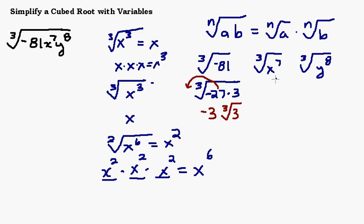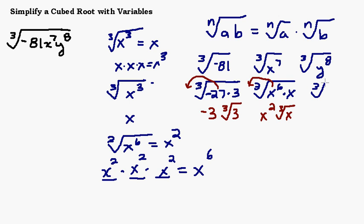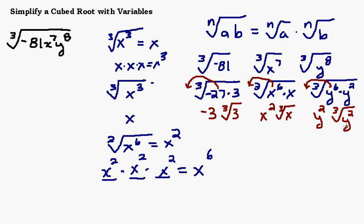For x to the seventh, I split it into x to the sixth times x. The x to the sixth comes out because it's divisible by three, giving me x squared, and then the remaining x stays underneath the cubed root. For y to the eighth, I split that into y to the sixth and y to the second, because six plus two is eight. The cubed root of y to the sixth comes out as y squared, and the y squared remains inside the radical.